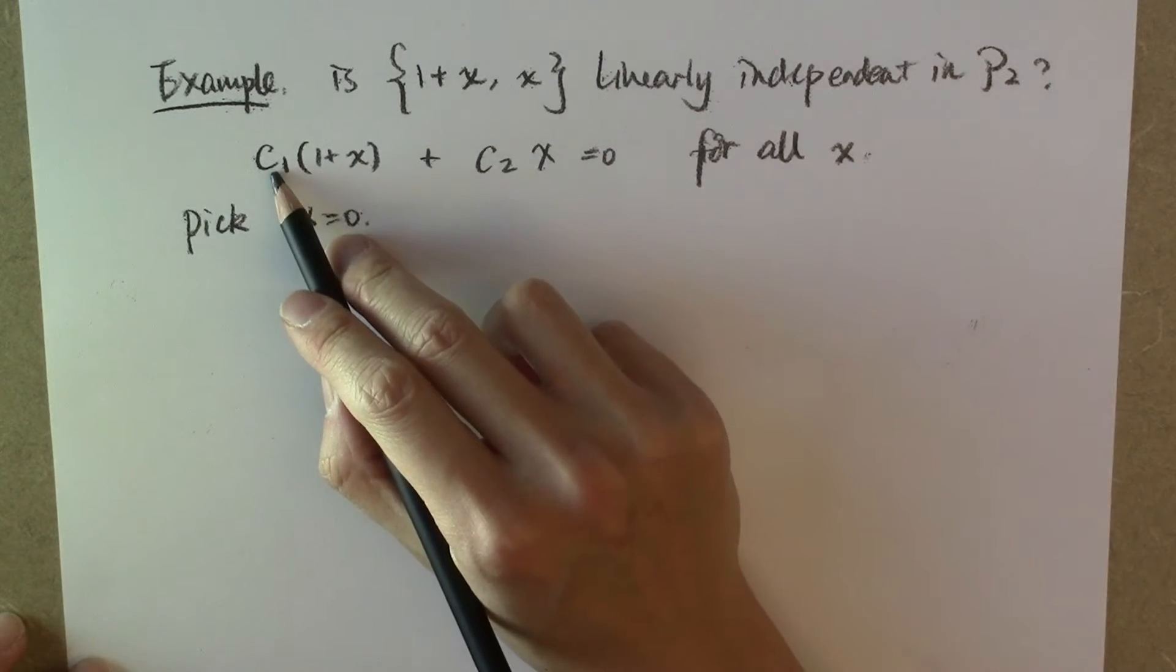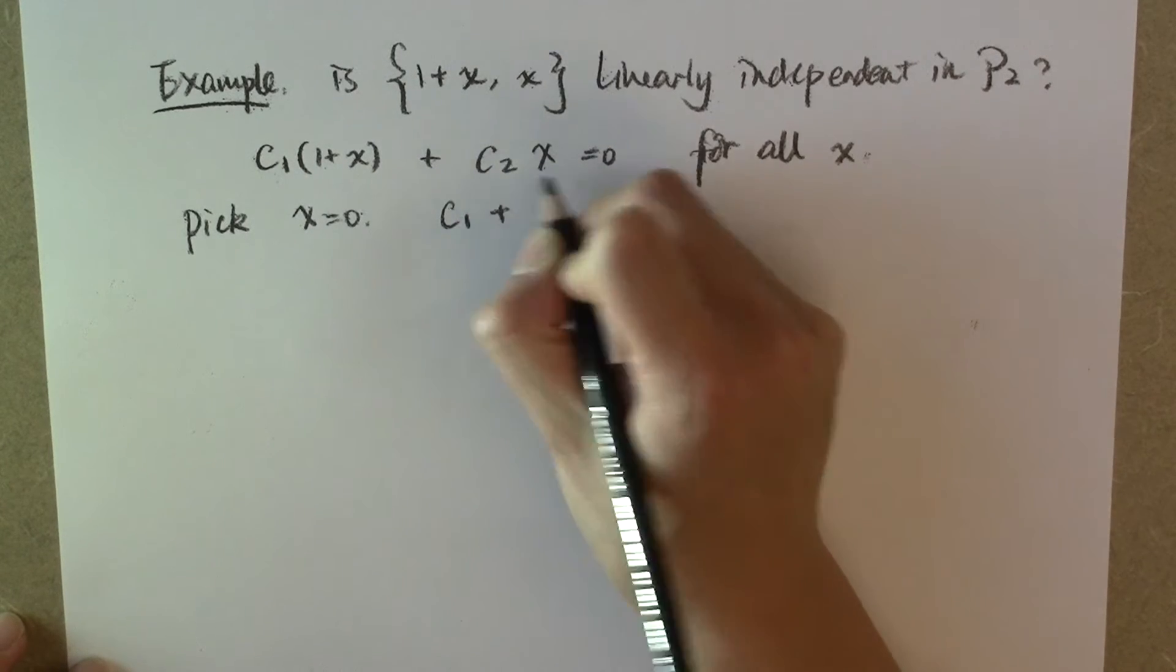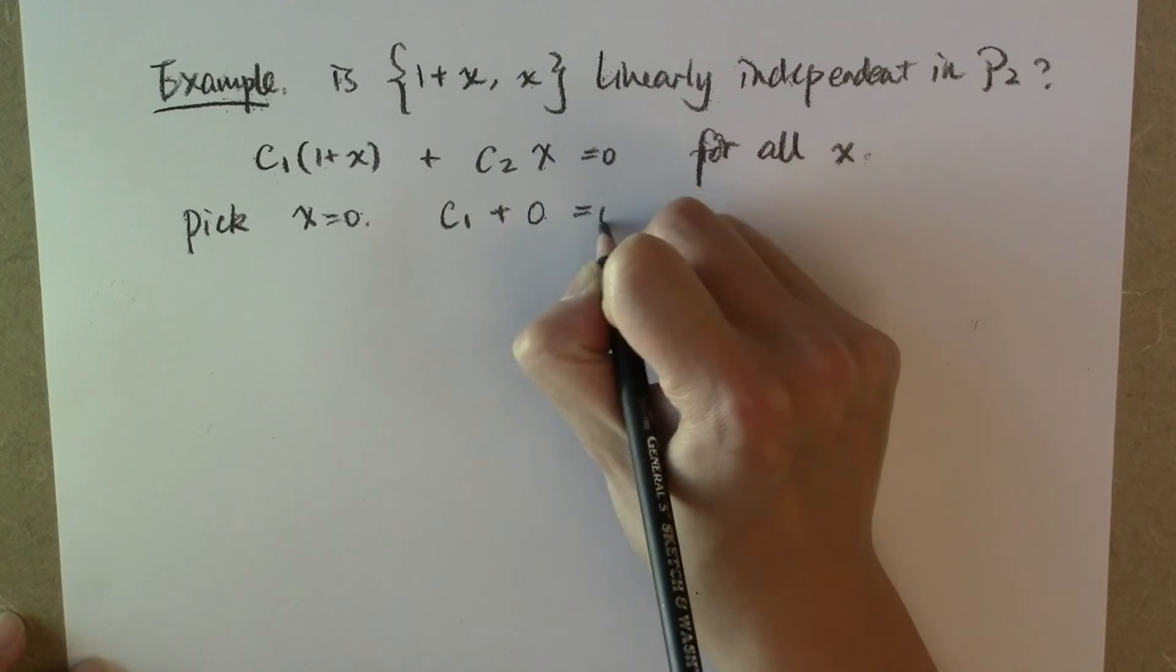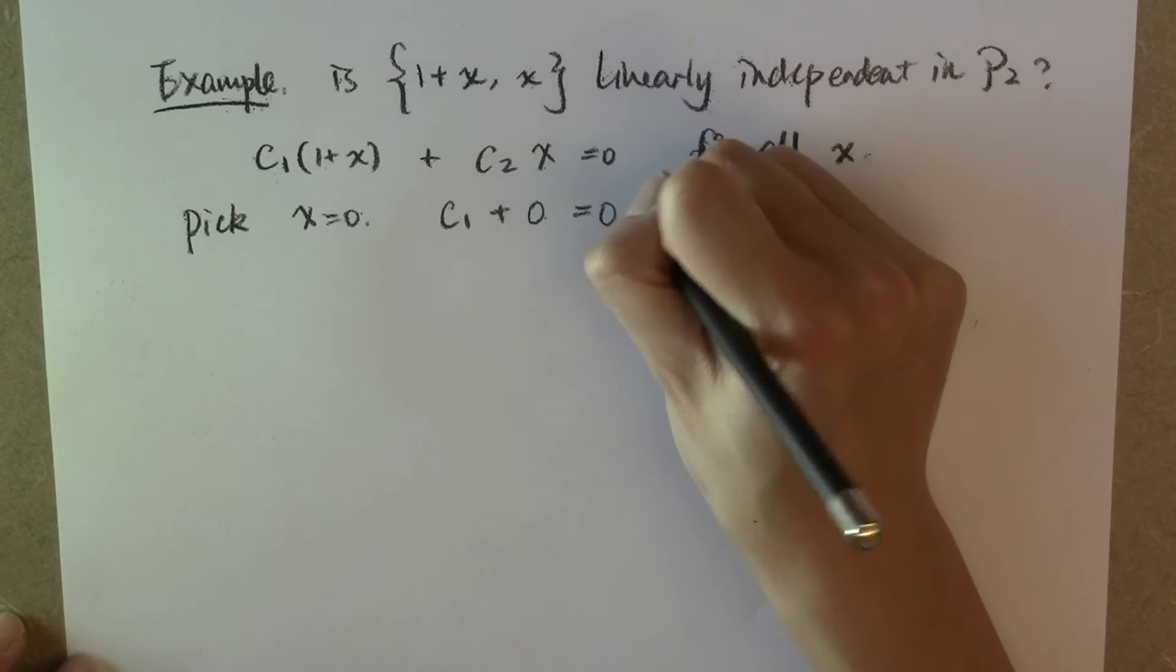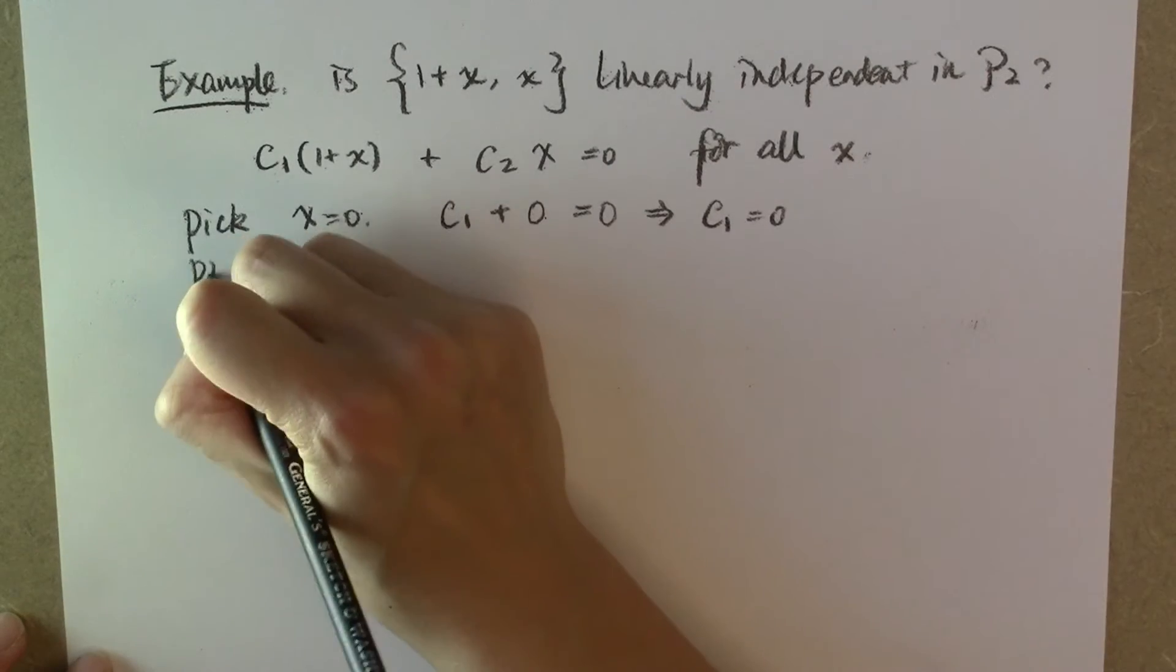That means c sub 1 multiplying 1 plus zero plus c sub 2 multiplying zero must be equal to zero. That implies that c sub 1 must be equal to zero. We can pick another value of x.